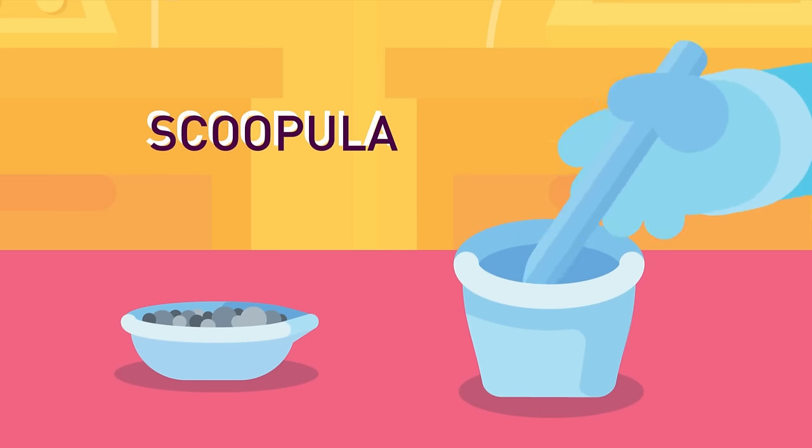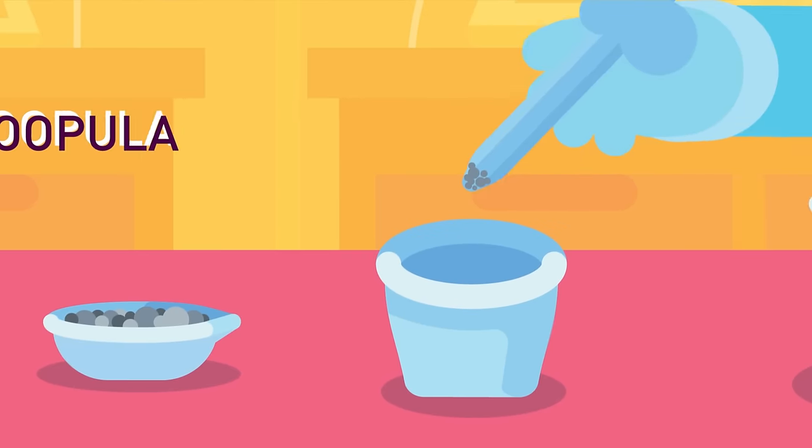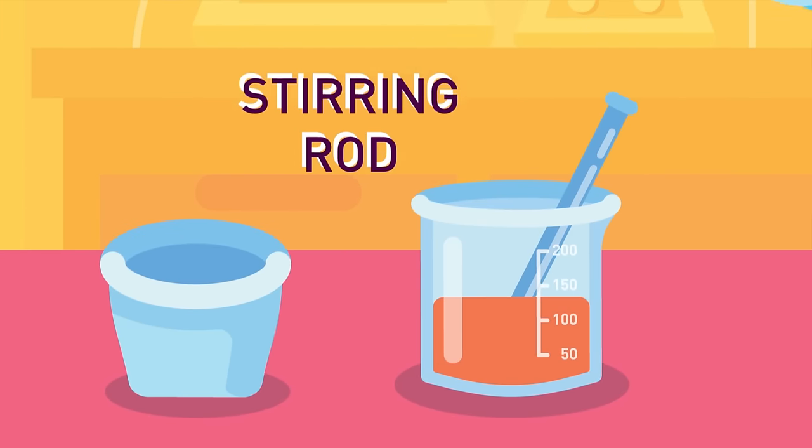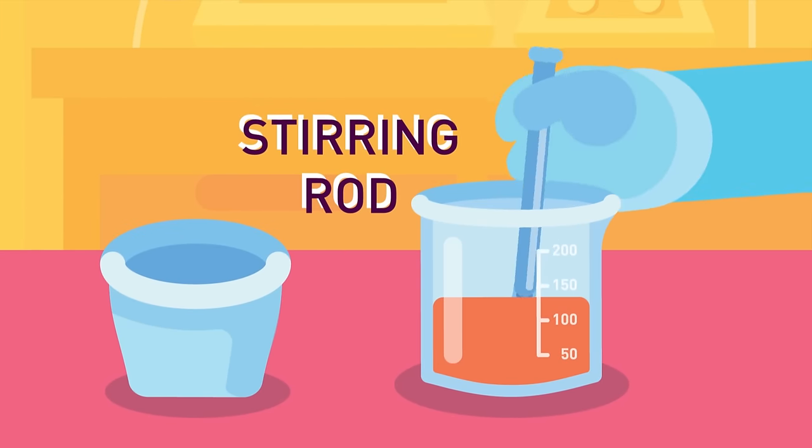Scupula. Used to transfer solids, looks similar to a spoon. Stirring Rod. Used for stirring and mixing, and is usually made of glass.